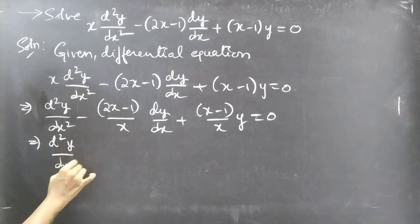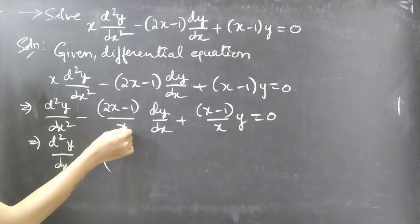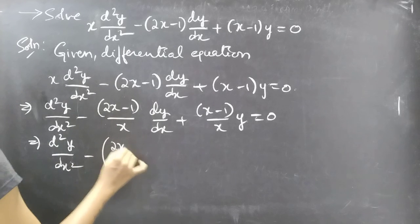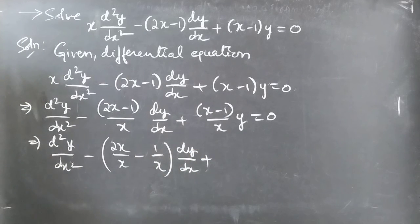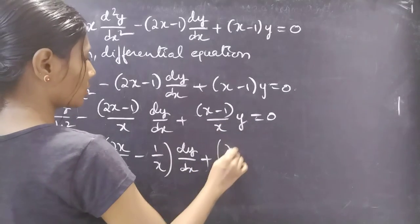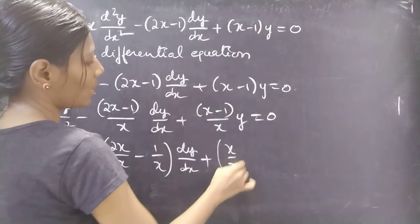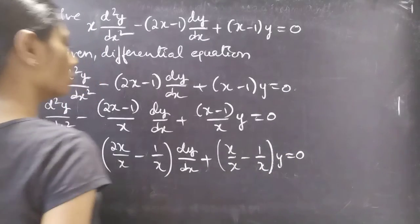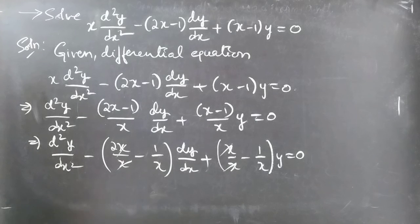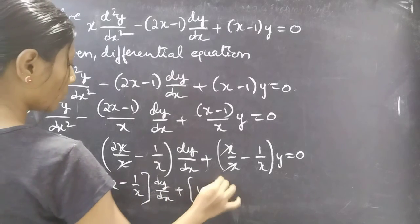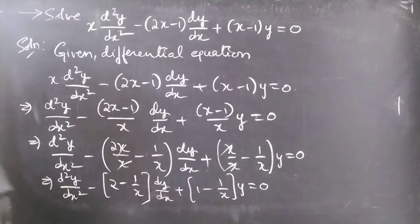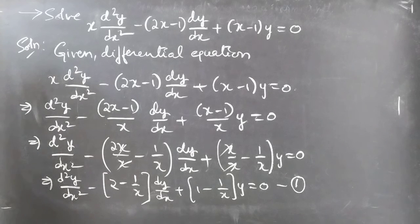We have two terms in the numerator and one term in the denominator for each fraction, so we split each fraction into two terms. Splitting (2x − 1)/x gives 2x/x − 1/x, and splitting (x − 1)/x gives x/x − 1/x. After cancellation this gives: d²y/dx² minus (2 − 1/x) dy/dx plus (1 − 1/x)y = 0. Consider this as equation 1, which is the standard form of the second order linear differential equation.